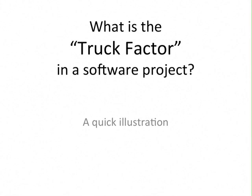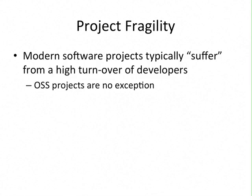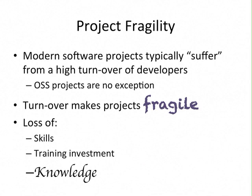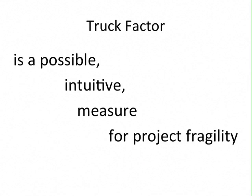What is the threat factor in a software project? I will present a quick and dirty illustration. First of all, we have to talk about what project fragility is. In modern software projects we observe that often there is a high turnover of developers, and open-source projects are no exception. This turnover makes projects fragile because when a developer leaves, there is a loss of skills, training investment, and knowledge — and knowledge is the focus of truck factor. Truck factor is essentially a possible intuitive measure of project fragility.